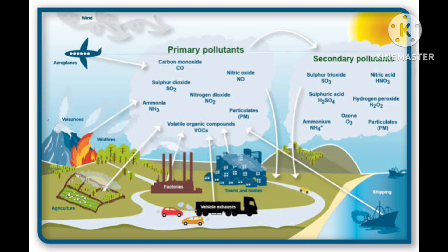Classical smog occurs in cold, humid climate. It is actually a mixture of three things: smoke, fog and sulphur dioxide. Chemically it is a reducing mixture, and so it is also called reducing smog.